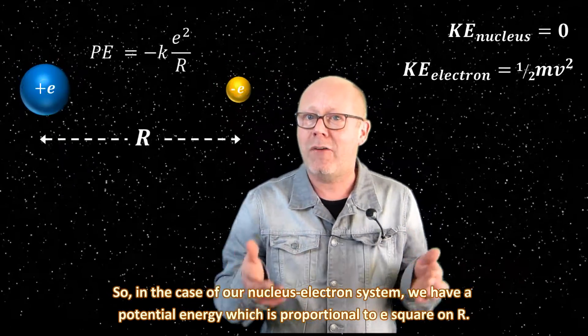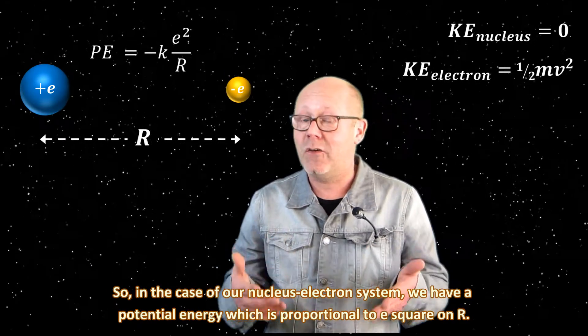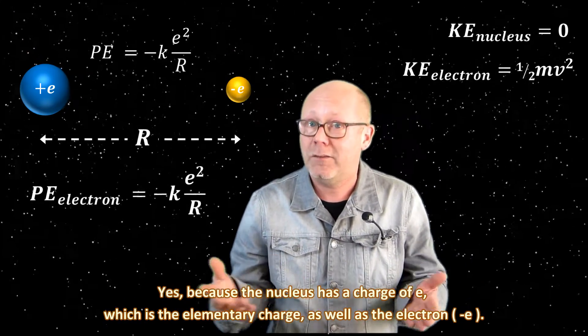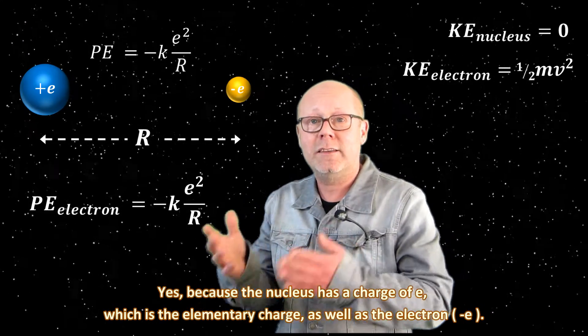So, in the case of our nucleus-electron system, we have a potential energy which is proportional to e square on r. Yes, because the nucleus has a charge of e, which is the elementary charge, as well as the electron.